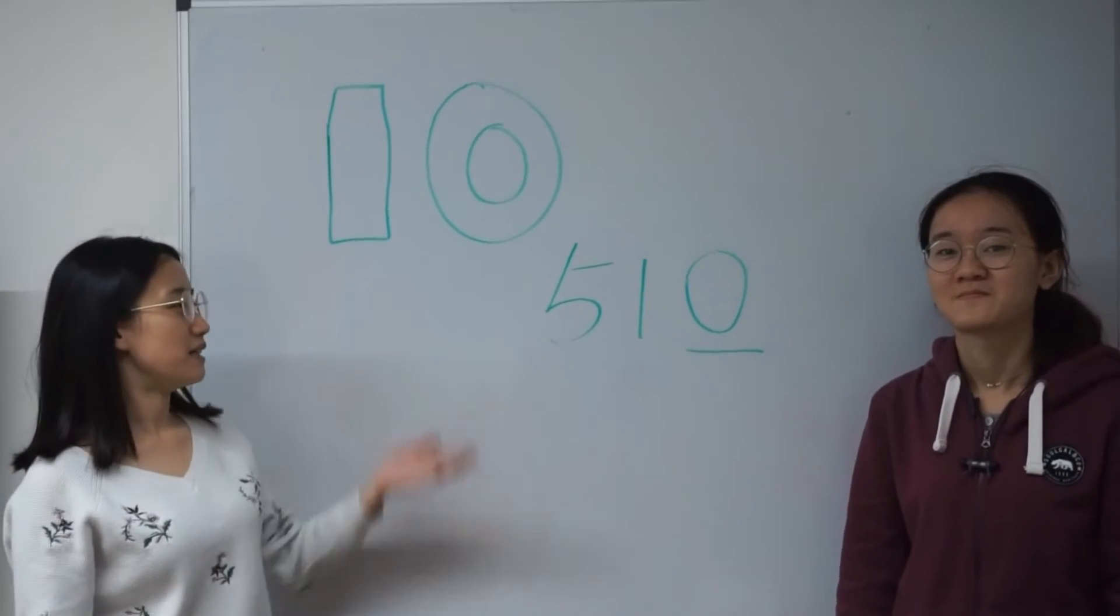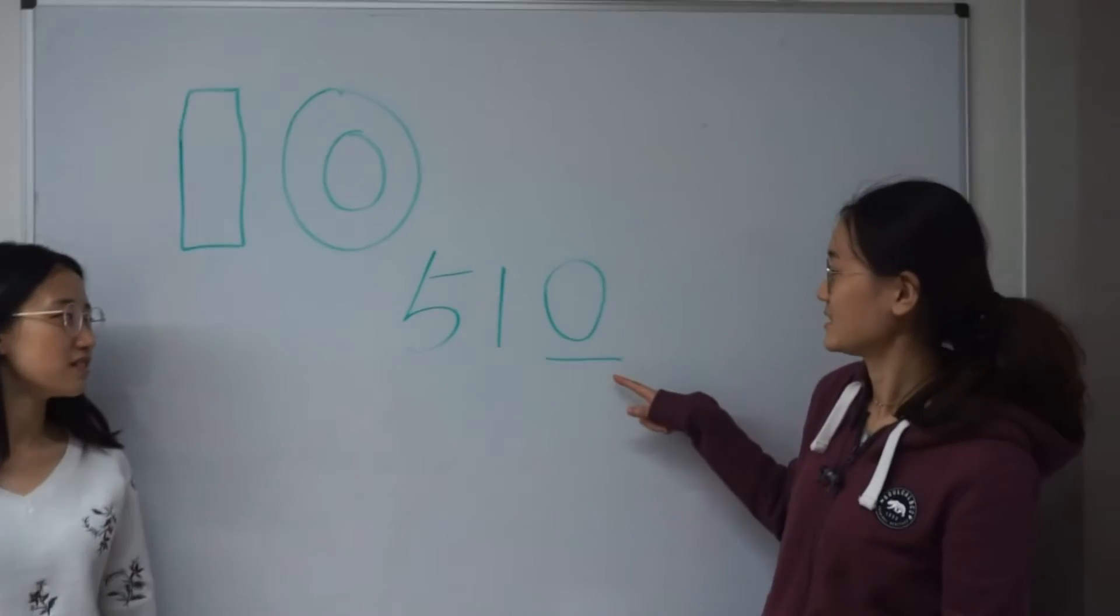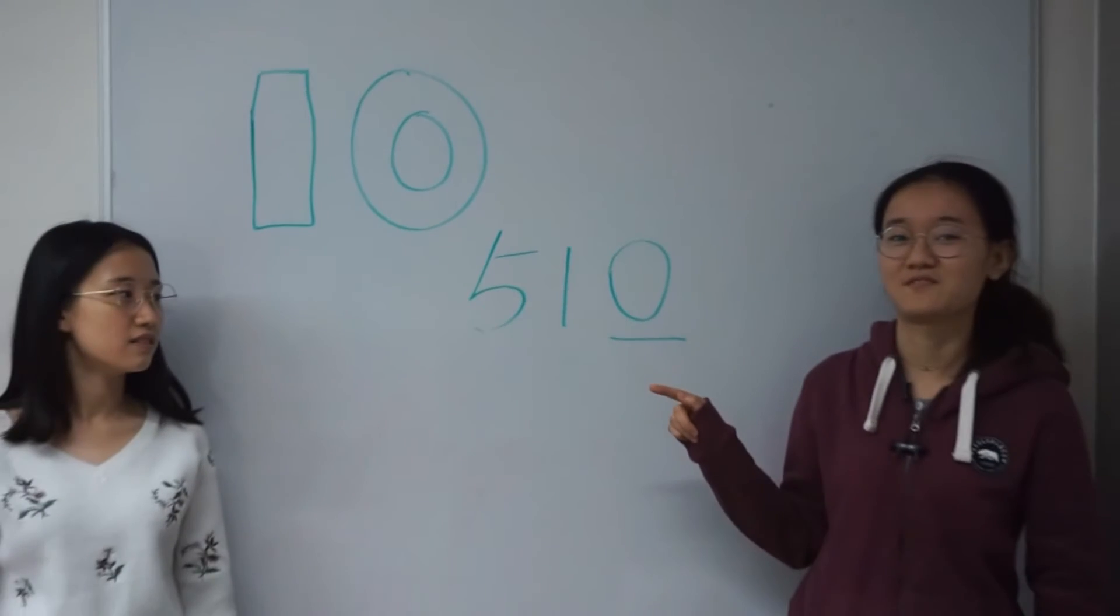The number is divisible by 10. Its last digit is 0. For example, the last digit is 0, so 510 can be divisible by 10.